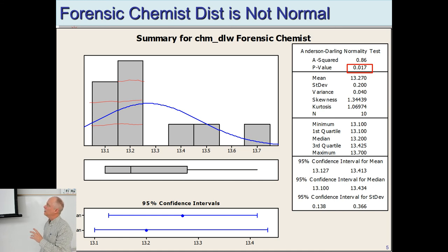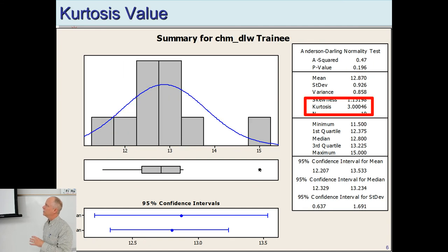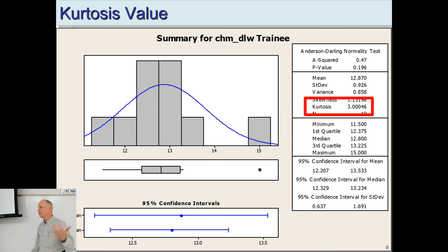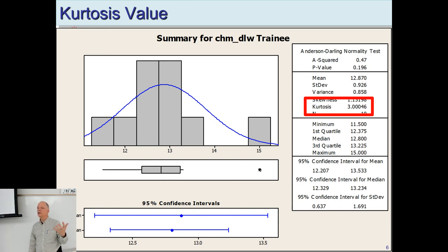That covers the normality analysis. Further down in the graphical summary we have mean, standard deviation, and variance — values you know how to calculate by hand. Check yourself with your calculator: put in the values, use the statistical tools, and verify against Excel. That way you have confidence in your results.